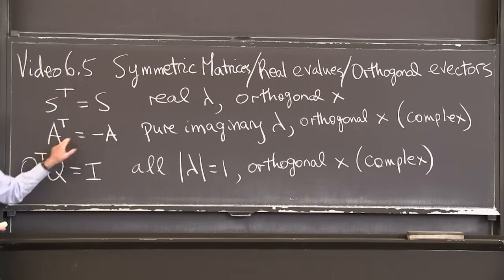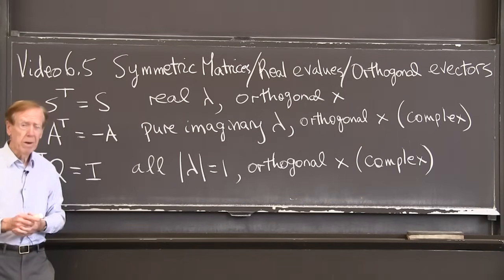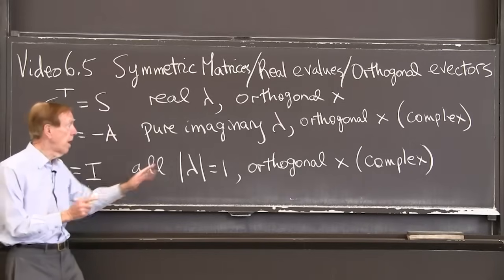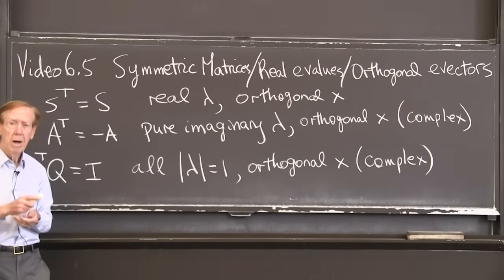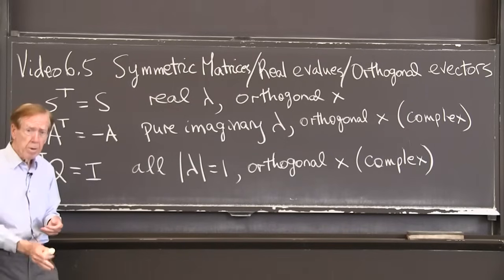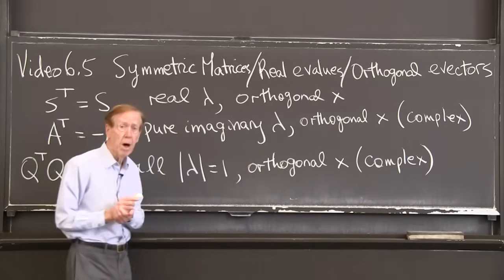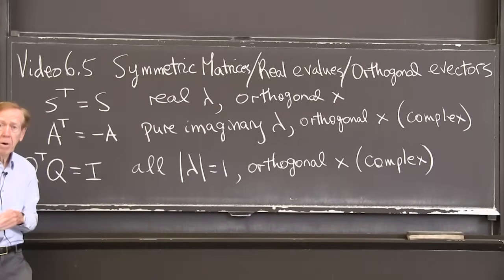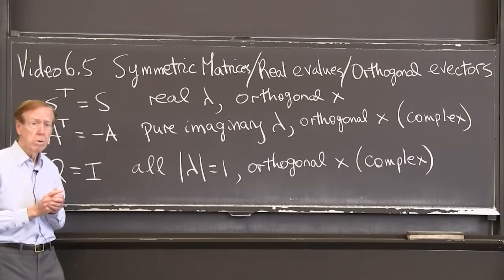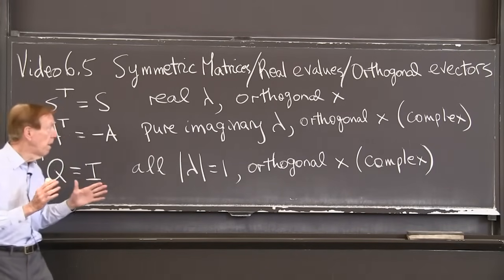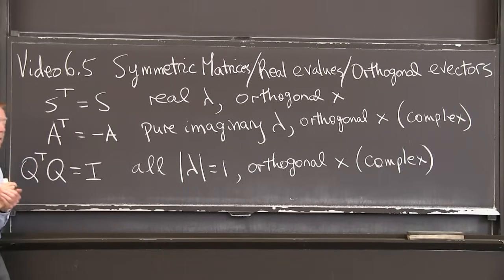We could also look at anti-symmetric matrices where the transpose is minus the matrix. In that case, we don't have real eigenvalues. In fact, we are sure to have pure imaginary eigenvalues, i times something on the imaginary axis. But again, the eigenvectors will be orthogonal. However, they will also be complex. When we have anti-symmetric matrices, we get into complex numbers. Can't help it, even if the matrix is real.